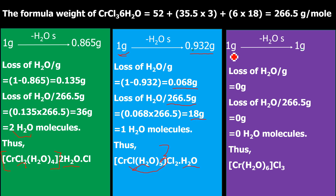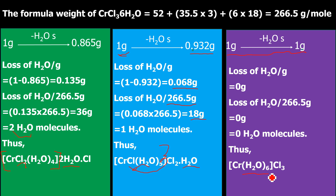For the violet coloured isomer, when 1 gram is dehydrated, there is no weight loss at all — 1 gram remains 1 gram. This means there is no water molecule outside the square bracket as water of crystallization. All 6 water molecules are acting as ligands. So we have focused on finding how many water molecules are in the coordination sphere for the green, blue-green, and violet isomers, and written down their formulas.